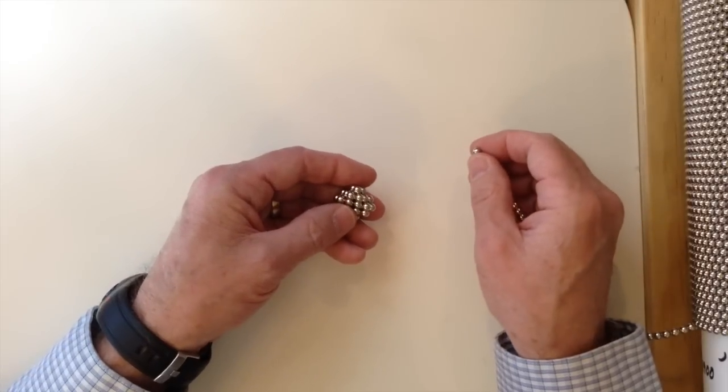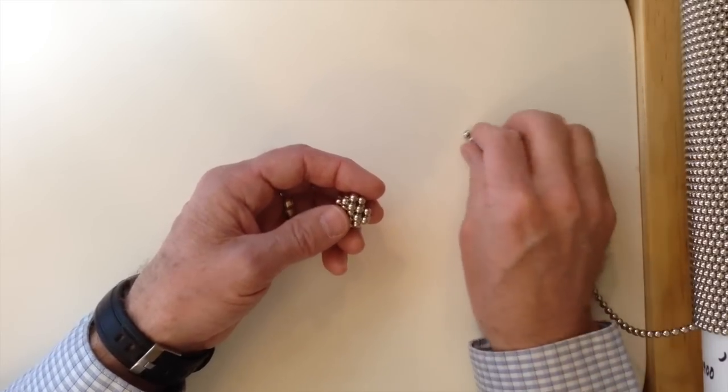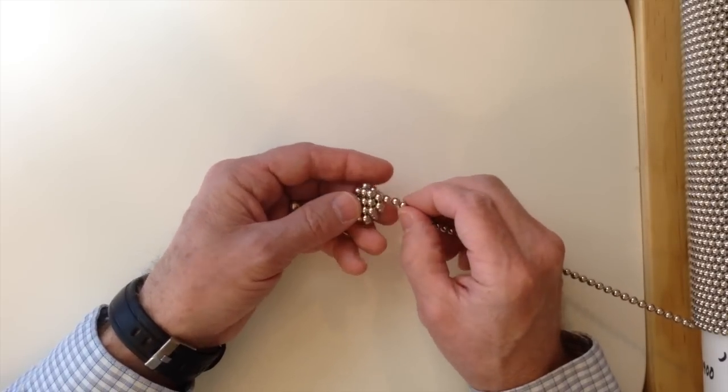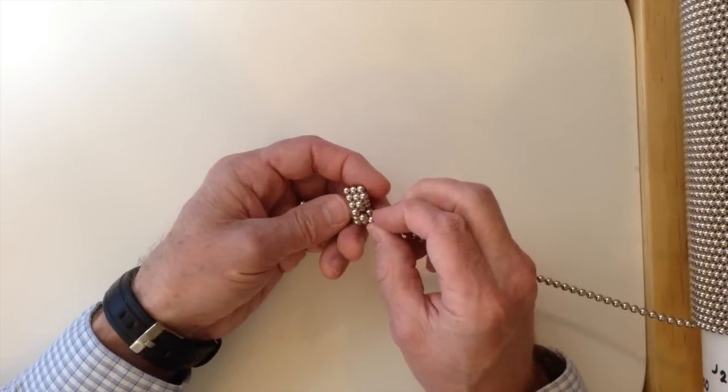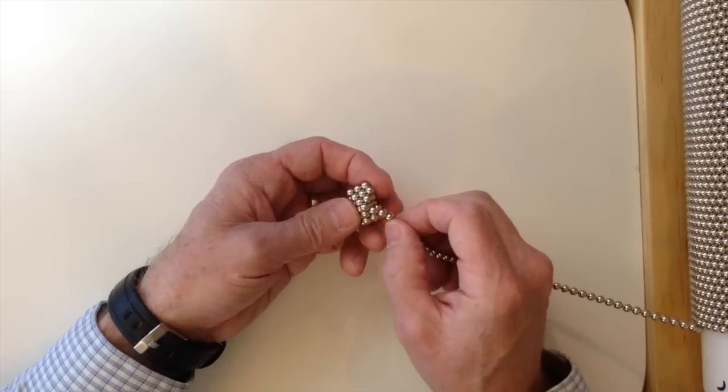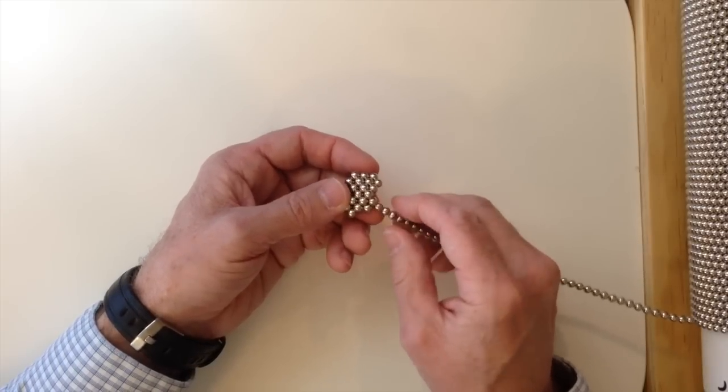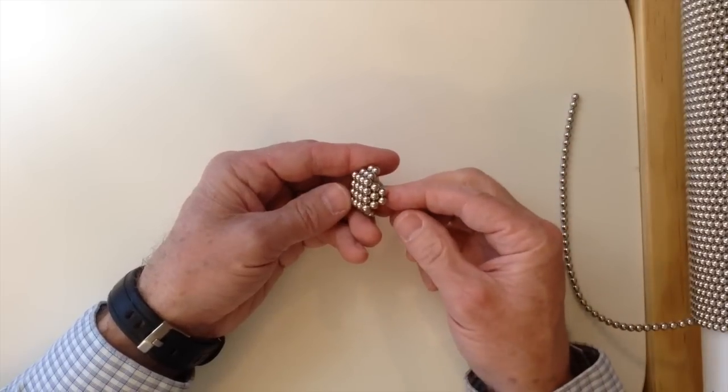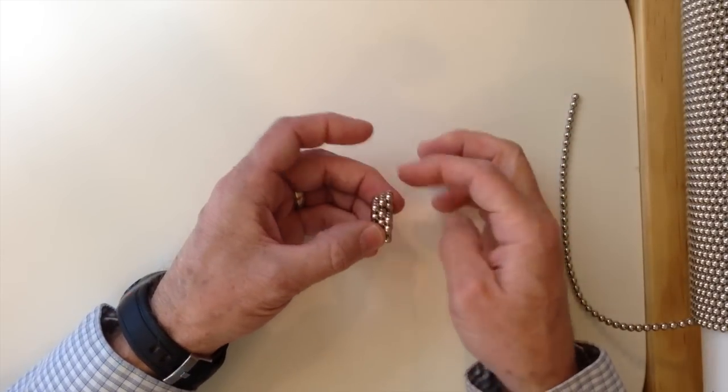So the next step is to run the magnet chain diagonally around the outside of this structure. So I'm just following the contours going zigzagging, zigzagging back and forth all the way around the outside of, or around the edge.